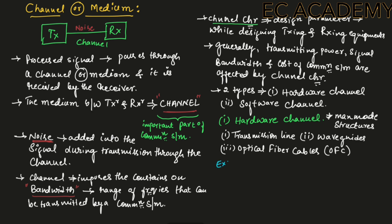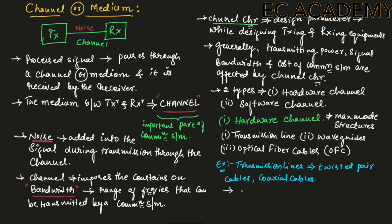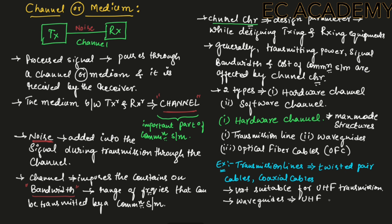Examples of transmission lines are twisted pair cables used in telephone lines and coaxial cables used in cable TV transmission. Transmission lines are not suitable for ultra-high frequency transmission. That is why waveguides are used for ultra-high frequency transmission.